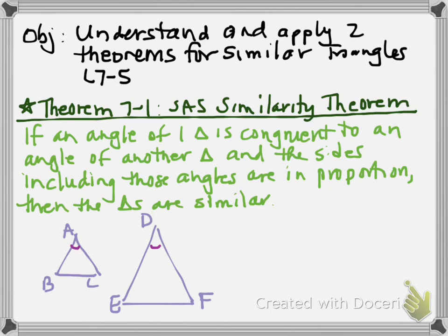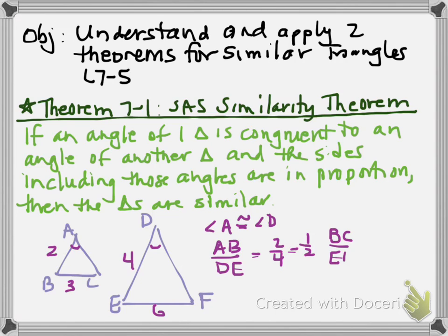So let's kind of investigate that with a picture. Here's triangle ABC, here's triangle DEF. And we're going to give you one piece of information. I'll throw some numbers in there. So if you notice, we've got angle A is congruent to angle D. Segment AB over segment DE is going to give me 2 over 4, or 1 half. Segment BC over EF is 3 over 6, and that is 1 half.